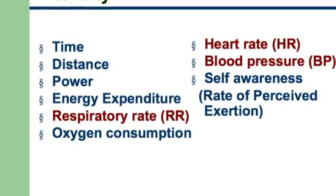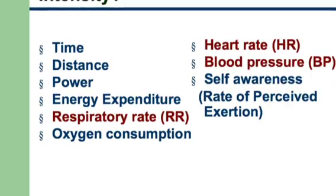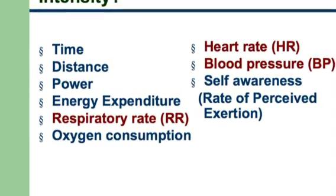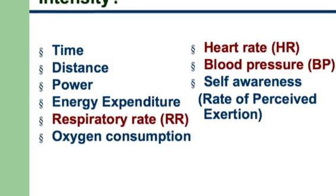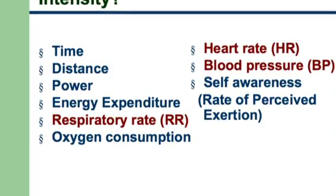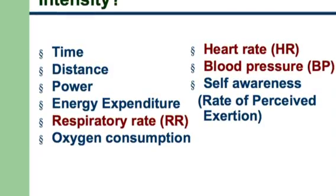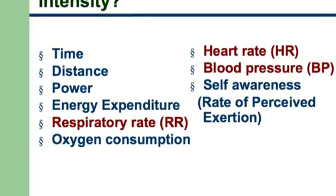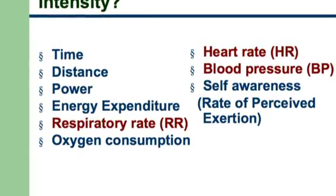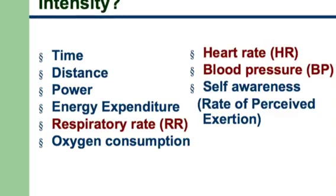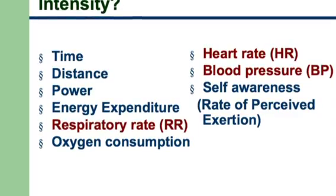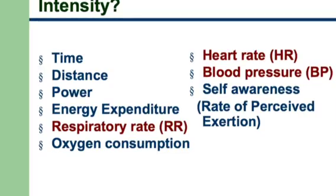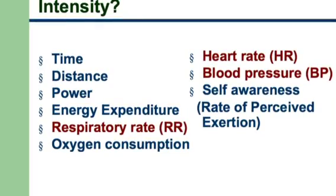The parameters that determine exercise intensity include: the time you do exercise for, the distance you cover, the power you are utilizing, the energy you are spending in the process, the respiratory rate, the oxygen consumption and the amount of oxygen you require to do the activity, then heart rate, change in blood pressure, and also self-awareness of the level of exercise. These are some of the means by which exercise intensity can be determined.